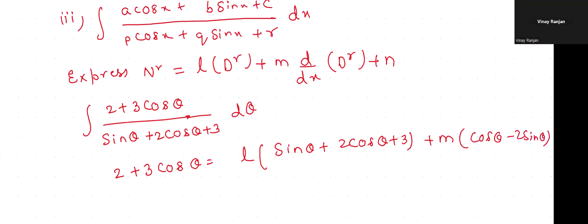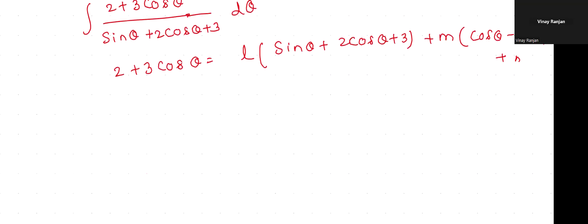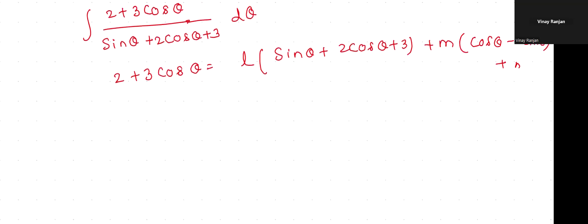Now compare the coefficient of sin theta and cos theta. Once you compare, you'll get 3l plus n equals 3, l minus 2m, and the third part equals 0. We have compared the coefficient of sin, cos theta and constant.